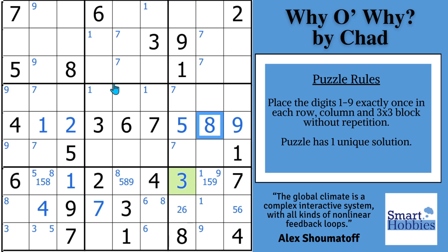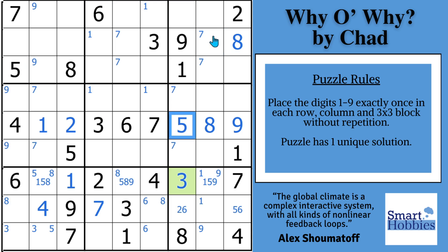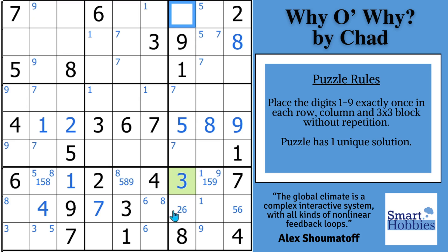I want to thank Chad for this wonderful puzzle — first time on Smart Hobbies, I don't think it'll be the last. Now look up in block three: you've got these two eights and this eight, so you can put an eight right there. Looking up in row one — we've got these two fives so the five has to be in one of these spots. This cell can't be a one, two, three, five, six, seven, eight, or nine — it actually has to be a four.